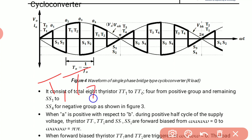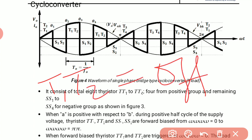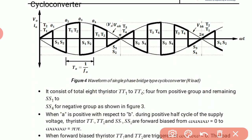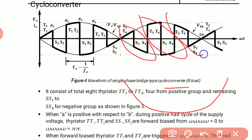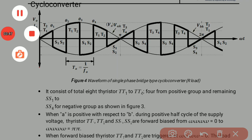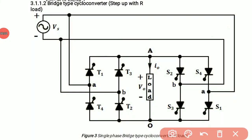At theta-one, T1, T2 will turn off but S1, S2 start conducting. As S1, S2 start conducting, the result is a small negative peak. This process continues and the full positive half cycle is converted into three sub-cycles. This process is also repeated for the negative half cycle, which is also converted into three sub-cycles.